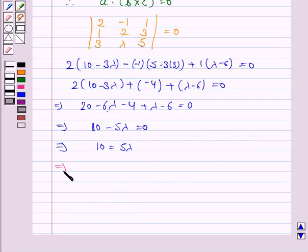This implies 10 equals 5 lambda, and this implies lambda equals 10 by 5. And this implies lambda equals 2. Hence the value of lambda is 2.